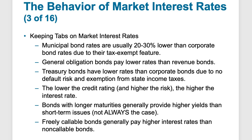Bonds with longer maturities provide higher yields than shorter-term issues because it's considered riskier the longer the bond is outstanding before repayment. Short-term treasuries are typically thought of as safer because of their shorter time horizon, though this isn't always the case — you can get an inverted yield curve where short-term issues have a higher yield than longer-term issues. Freely callable bonds pay higher interest rates than non-callable bonds because the bonds can be recalled and refinanced if interest rates go down.